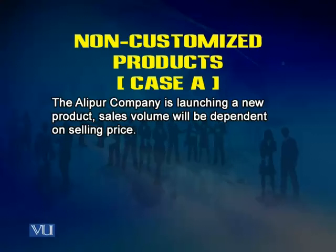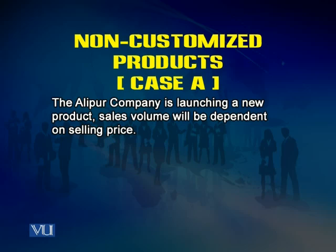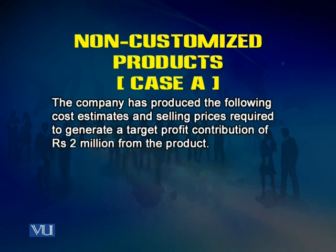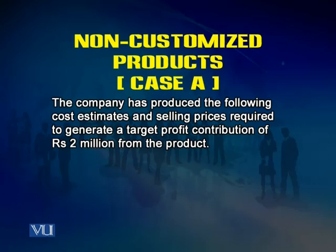Consider the Alipur Company, which is launching a new product. Sales volume will be dependent on selling price — the selling price goes up, volume goes down; selling price goes down, volume goes up. The best estimate is that demand is likely to range between 100,000 and 200,000 units, provided the selling price is below Rs. 100. The company has produced cost estimates and selling prices required to generate a target profit contribution of 2 million from the product.